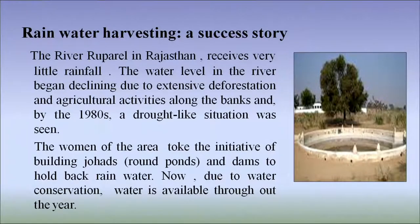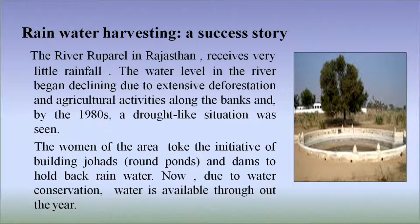There are several case studies regarding rainwater harvesting. The first is a success story: river Rupil in Rajasthan receives very little rainfall. The water level in the river began declining due to extensive deforestation and agricultural activities along the banks, and by the 1980s, a drought-like situation was seen. The women of the area took the initiative of building johads, round ponds and dams to hold back rainwater. Now, due to water conservation, water is available throughout the year in this area. The second case study is related to rainwater harvesting at Rashtrapati Bhavan, undertaken by the Centre for Science and Environment (CSE), a New Delhi-based NGO.